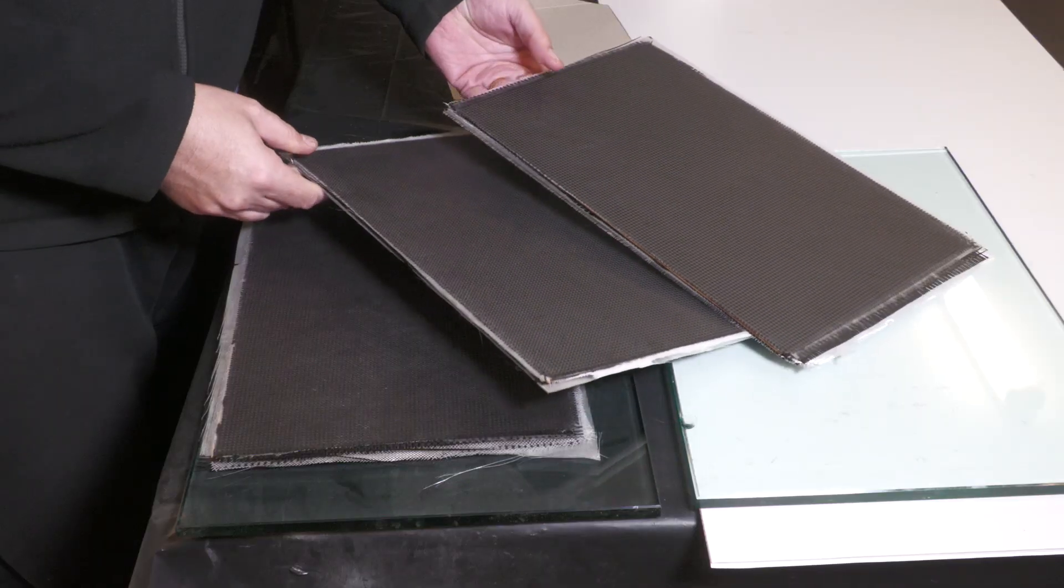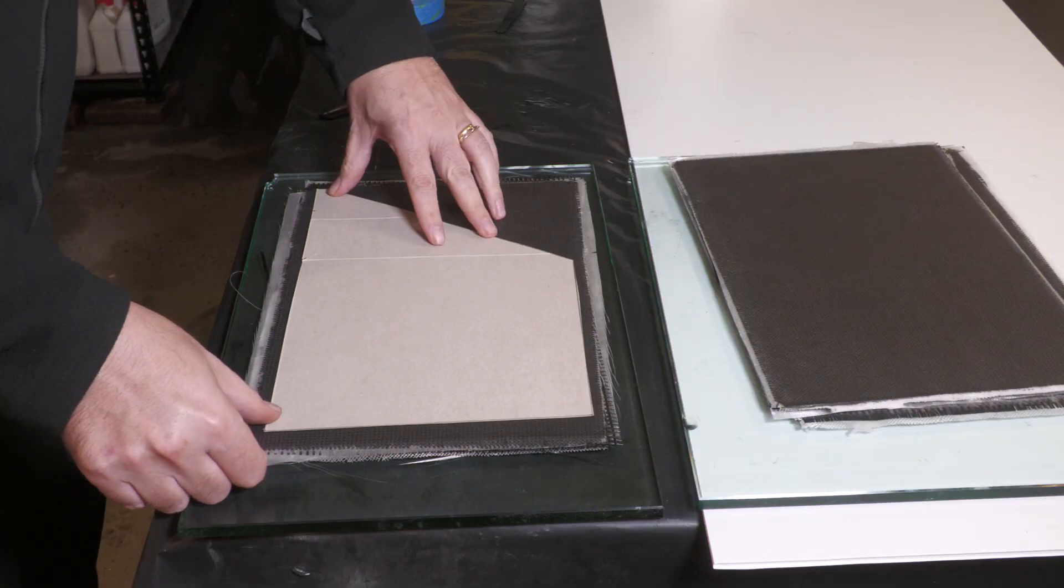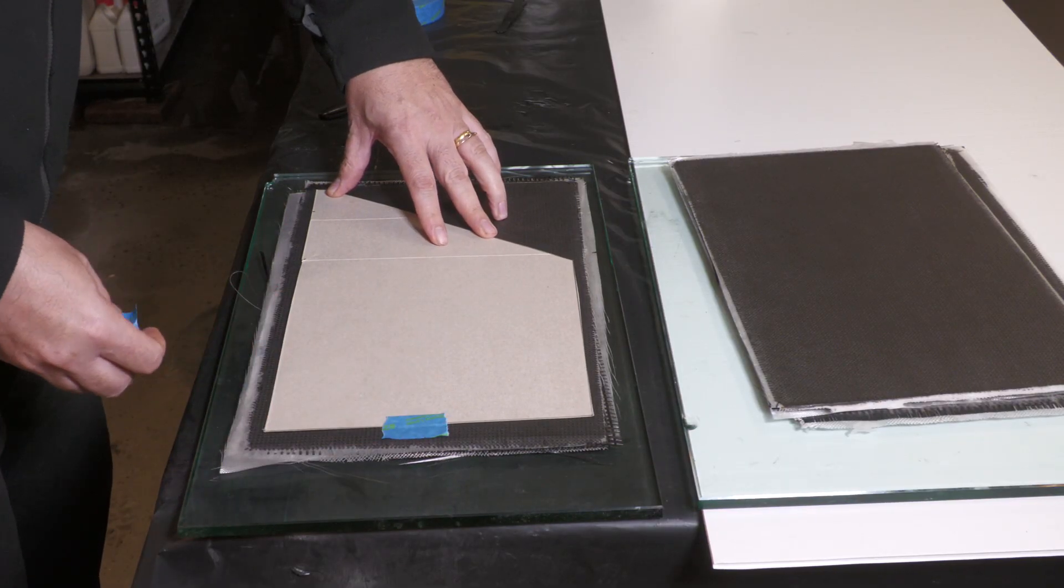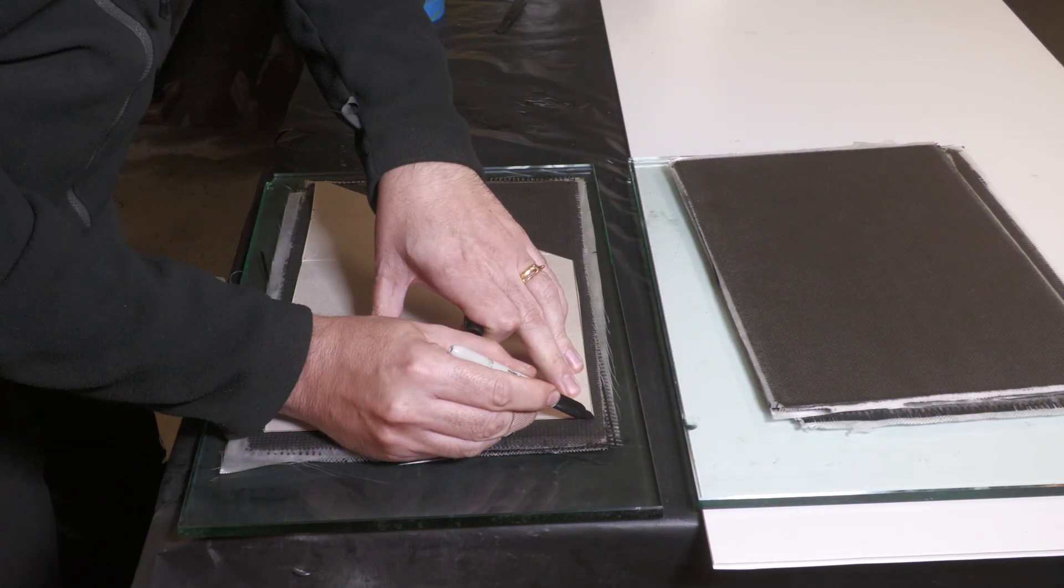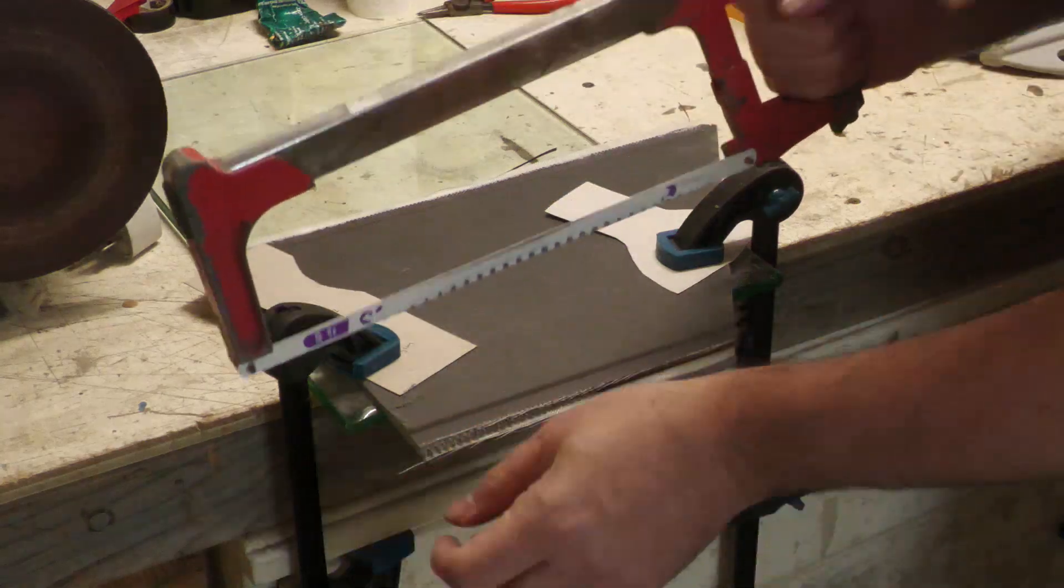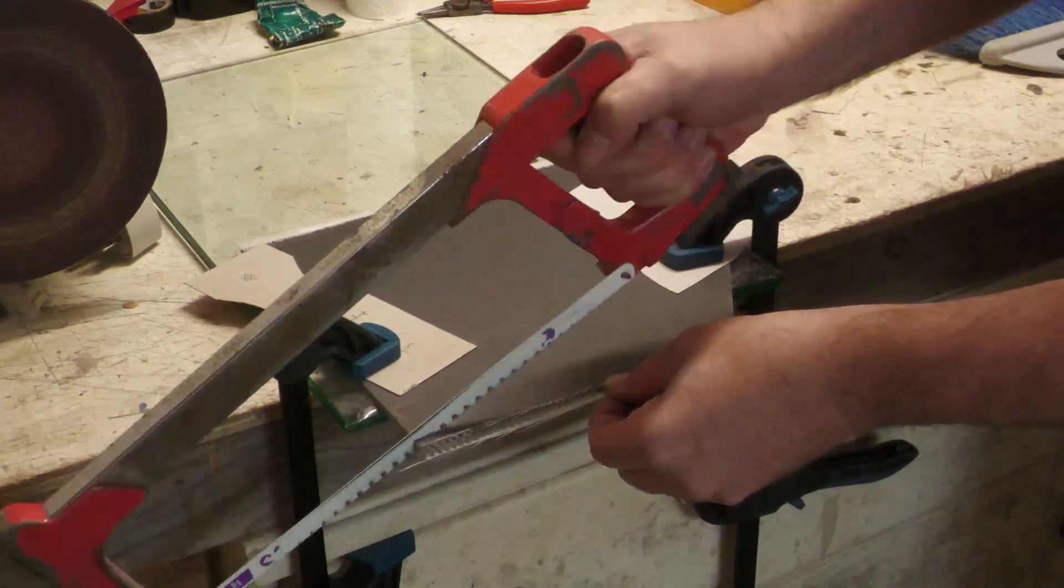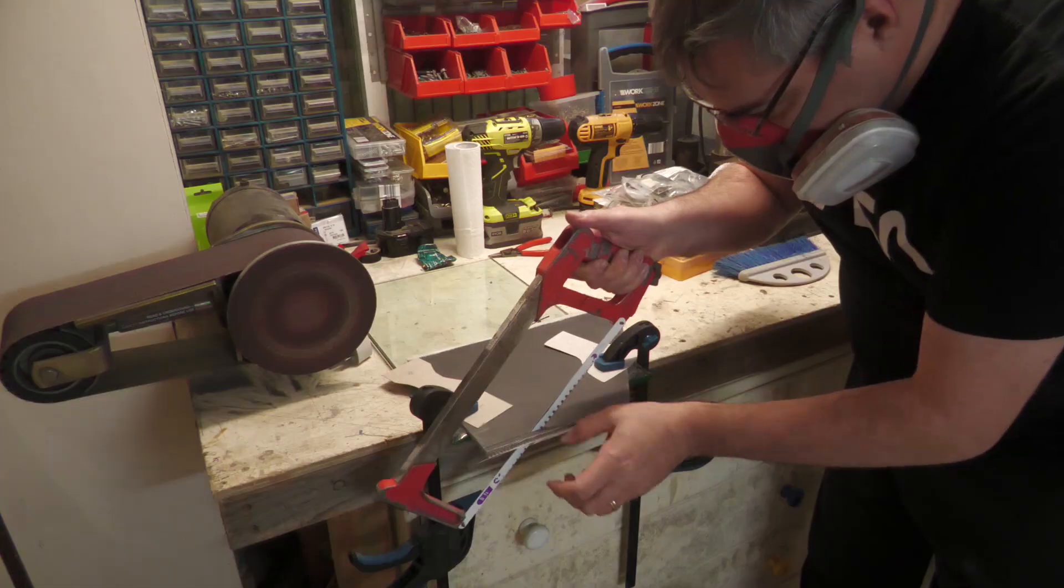And here are all three fin plates made up. Then we can transfer the fin pattern to each plate. It was easy enough to use a hacksaw to cut the fins out, although we did go through a couple of blades because they wear out quite quickly on the carbon fiber.